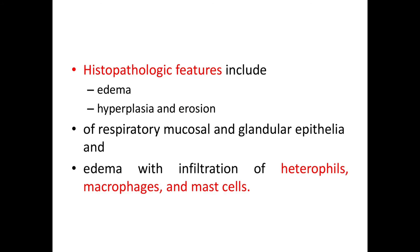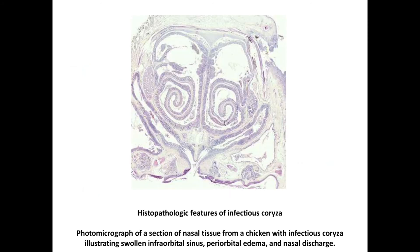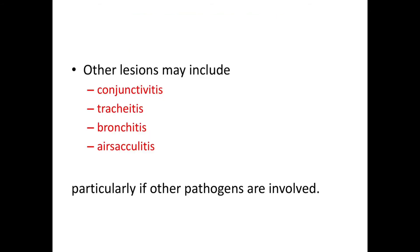Now we will see a picture of histopathology. This is a section of nasal tissue from a chicken infected with Avibacterium paragallinarum, illustrating swollen infraorbital sinuses, periorbital edema, and nasal discharge. Other lesions may include conjunctivitis, tracheitis, bronchitis, and air sacculitis, but these lesions are seen particularly if other pathogens or concurrent bacterial infections are also involved.